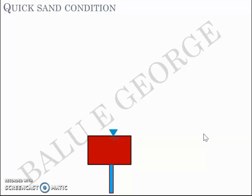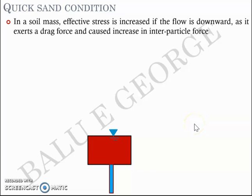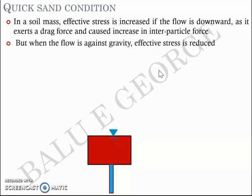If you have a soil mass, the effective stress sigma-dash is increased if the flow is downward, as it exerts a drag force and causes an increase in interparticle force. When flow is in a downward direction the effective stress increases, in the direction of gravity. But when the flow is upward against gravity, the effective stress on the soil is reduced.